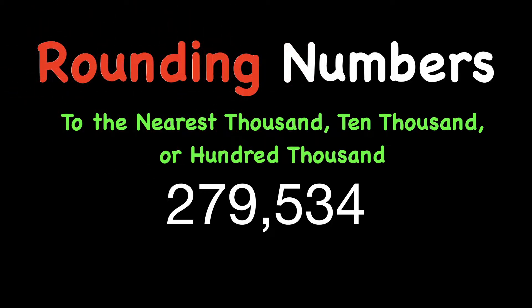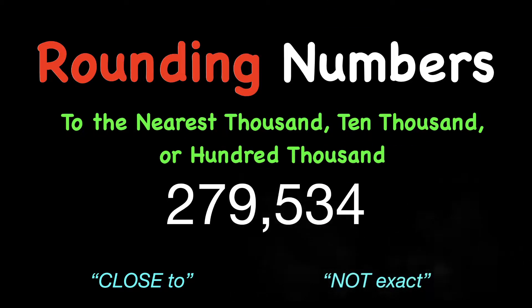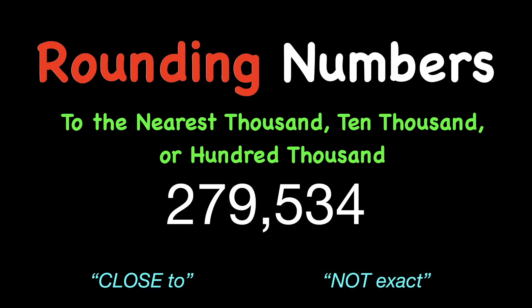Rounding just means that we're starting with a number and we're looking for another number that's just close to that. It doesn't have to be exact. And our answer is going to end in one, or today, maybe up to four or five zeros.